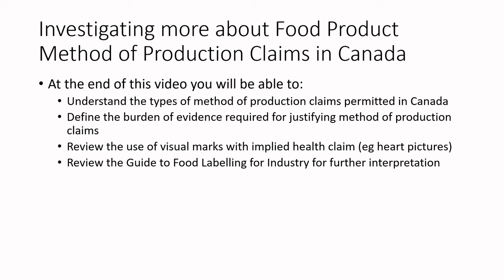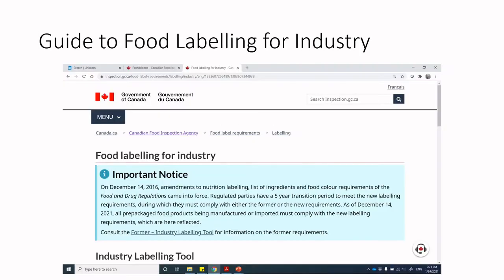We'll understand the types of method of production claims permitted in Canada, define the burden of evidence required for justifying them, and review the use of visual marks with implied health claims — for example, little heart pictures. We'll also review the Guide to Food Labeling for Industry, which is a fluid document that can change, so always get the most up-to-date information from the website.